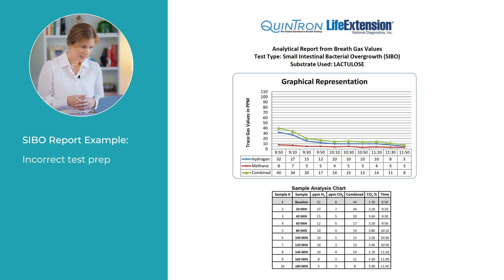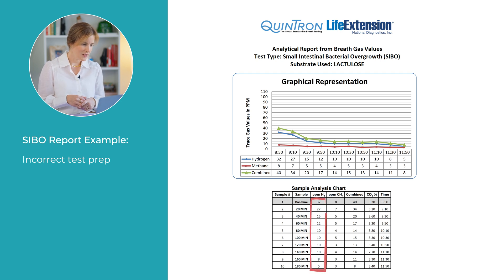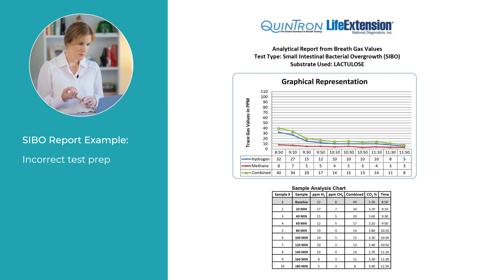Next, let's take a look at what improper test prep looks like. Sometimes we get labs back where hydrogen is very elevated from baseline at 32 parts per million and then drops quickly and doesn't elevate again in the small intestine. This is common when the test prep process hasn't been followed correctly. This lab was from 2020 from a client who came to us with testing they had completed themselves.